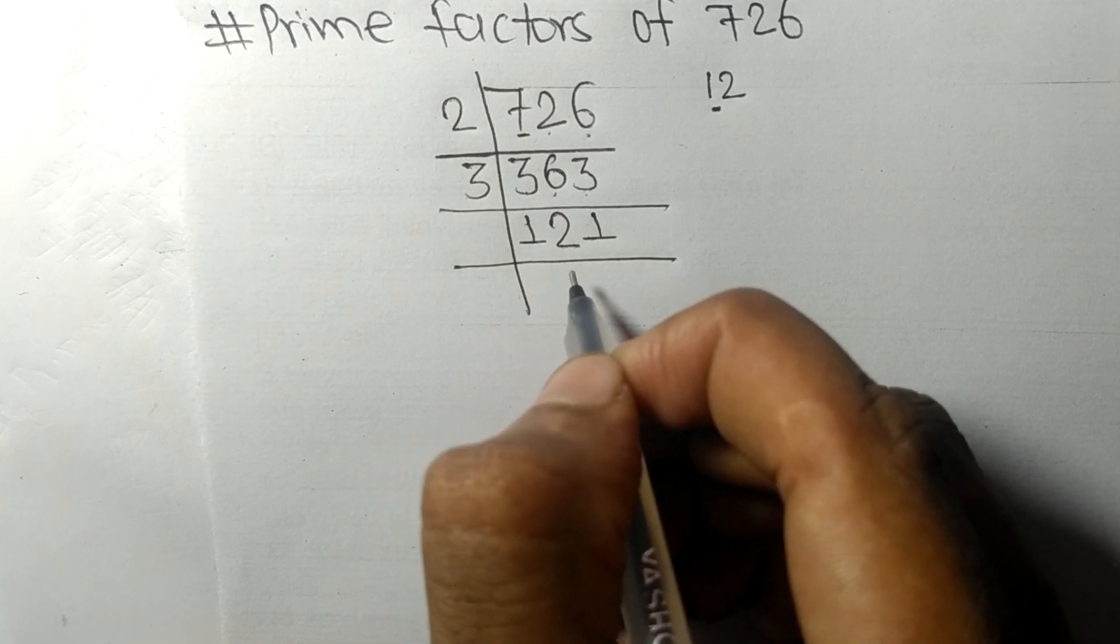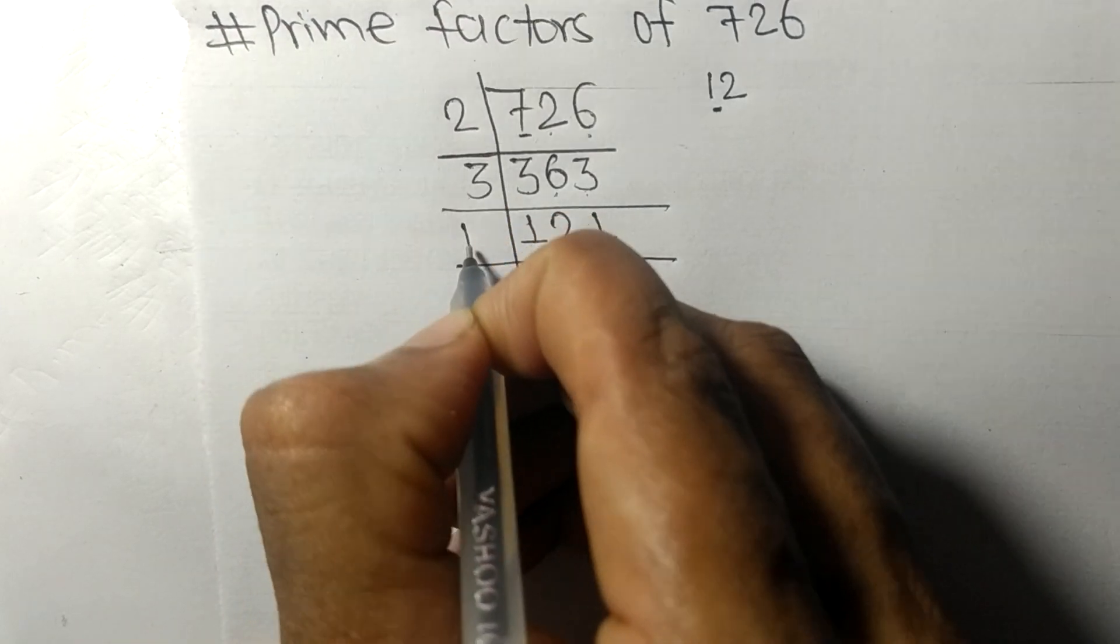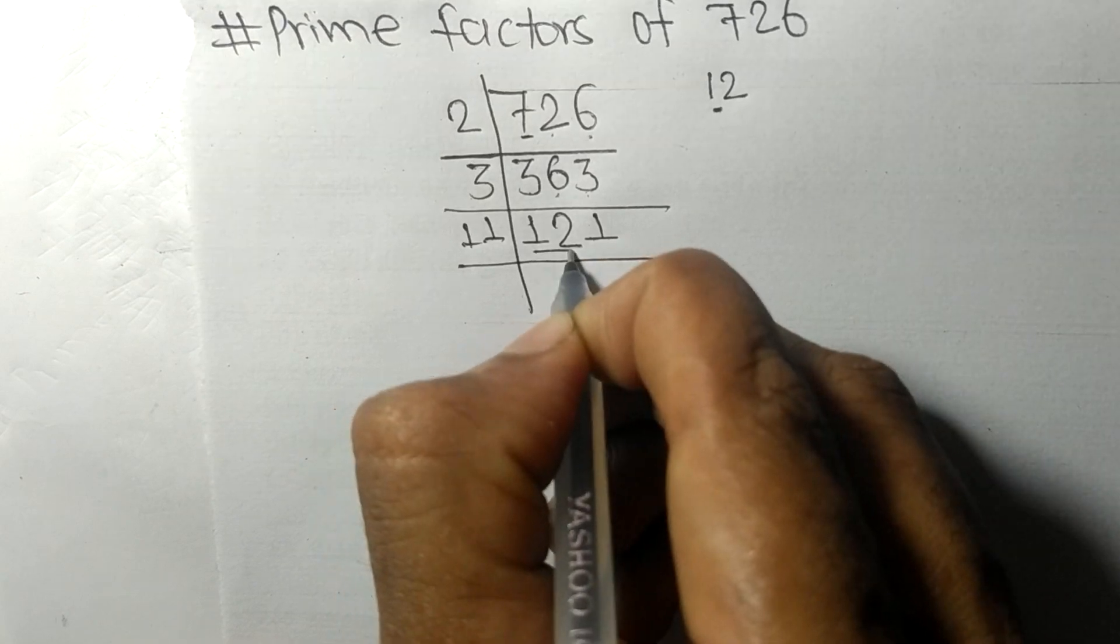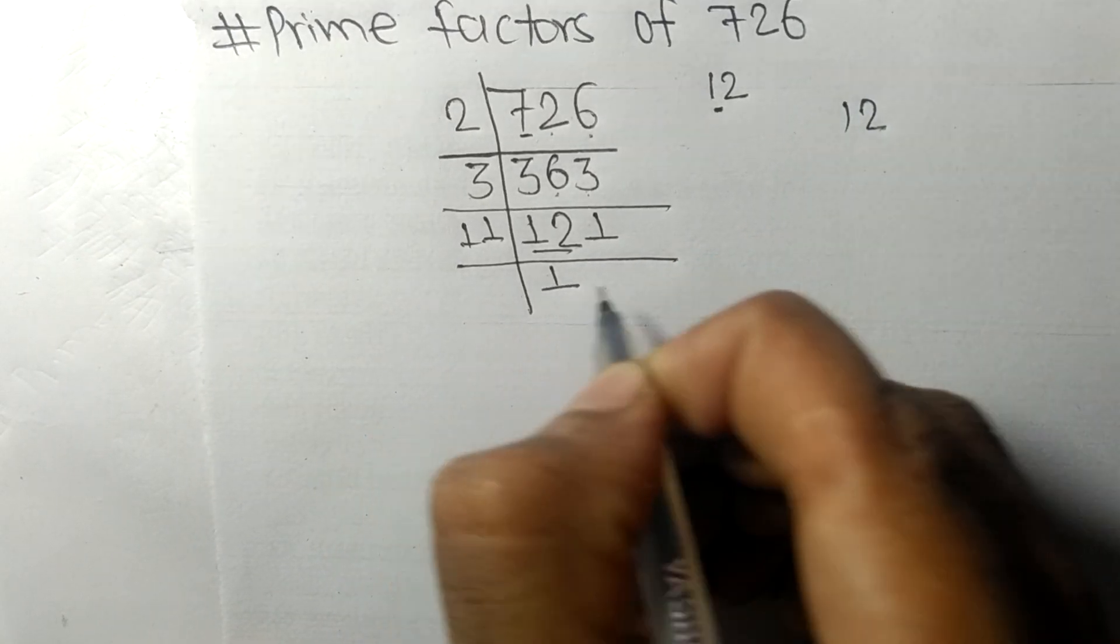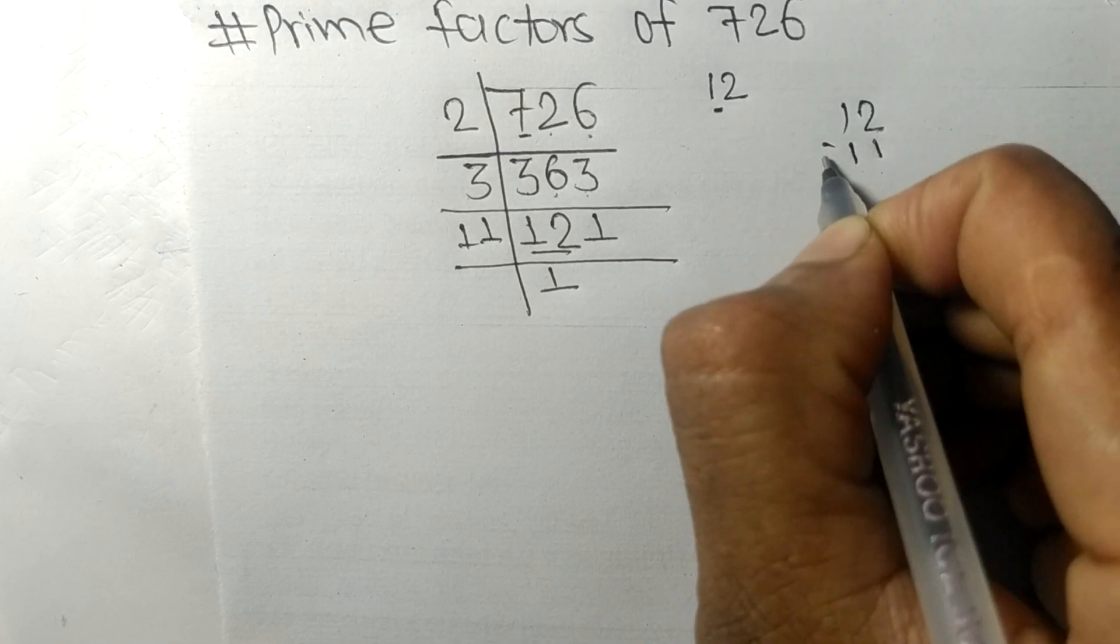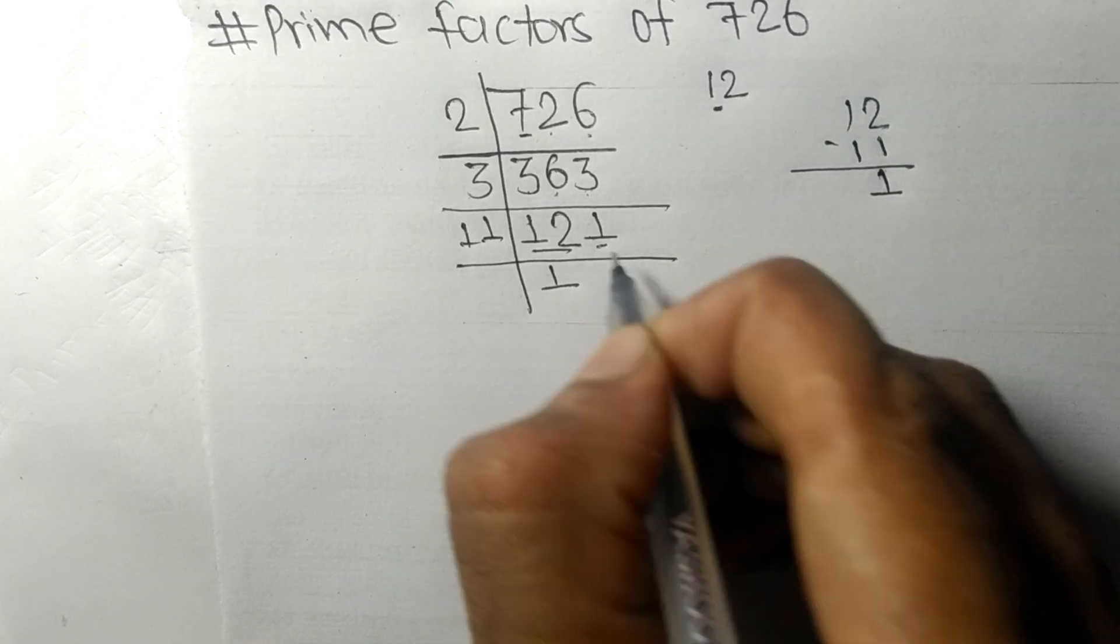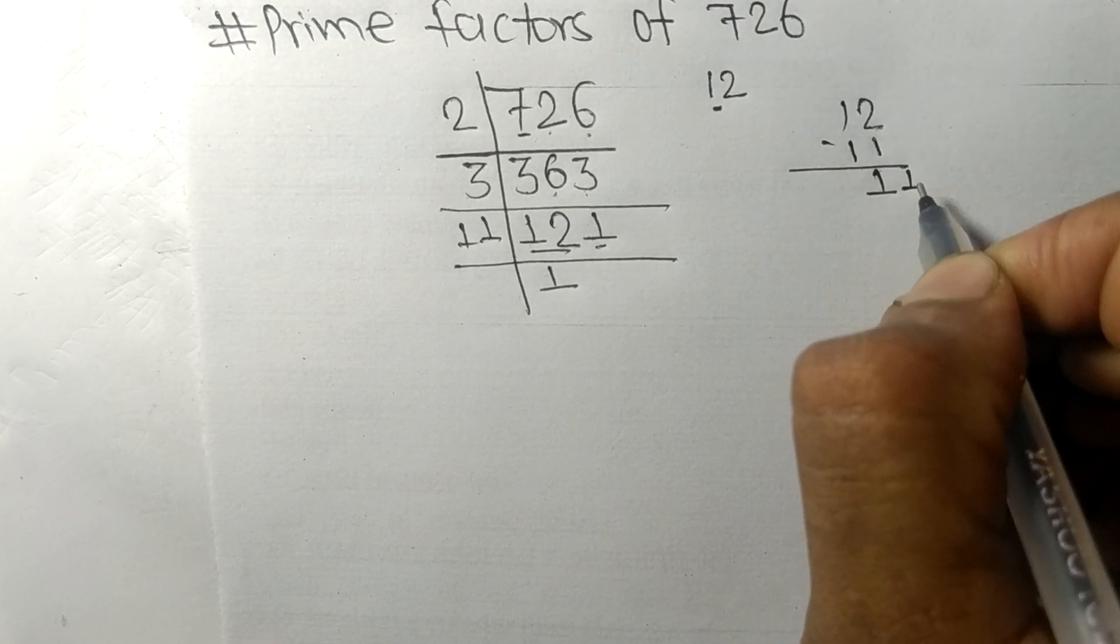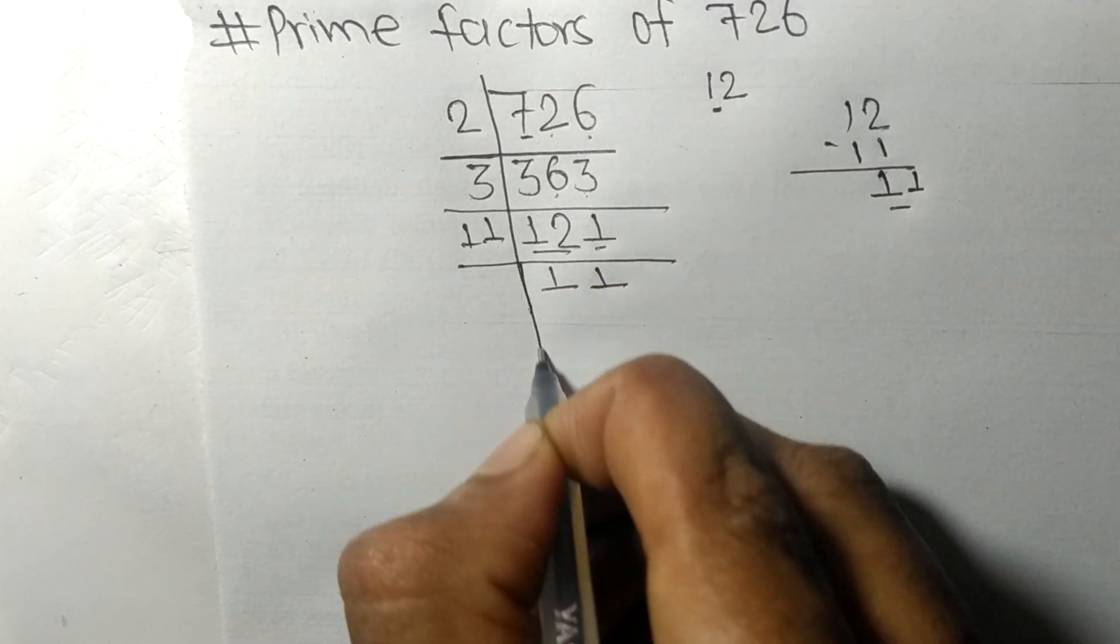Now we got 121, which is exactly divisible by 11. So 11 times 1 equals 11. On subtracting we get 1, and this 1 became 11. 11 times 1 equals 11.